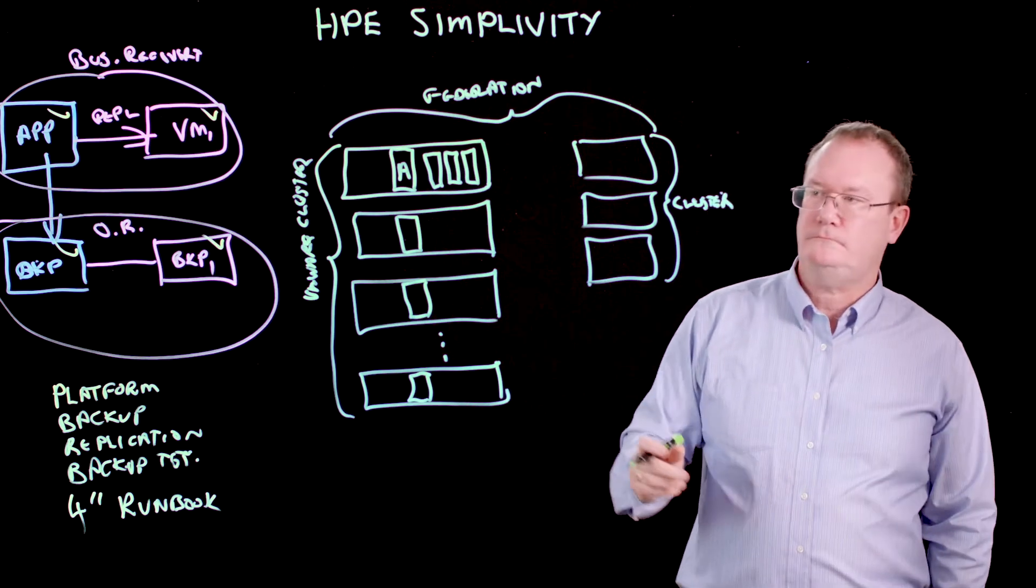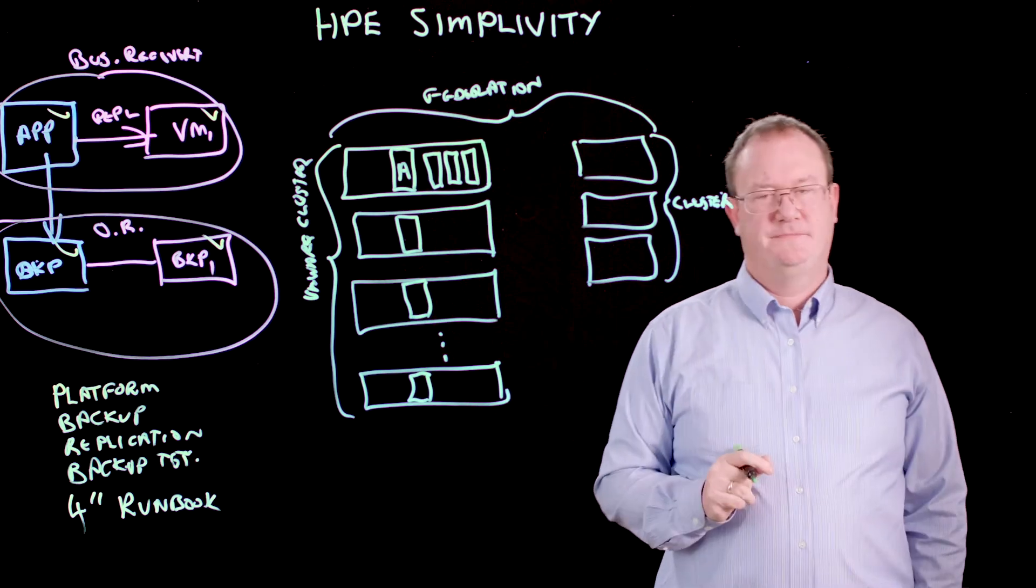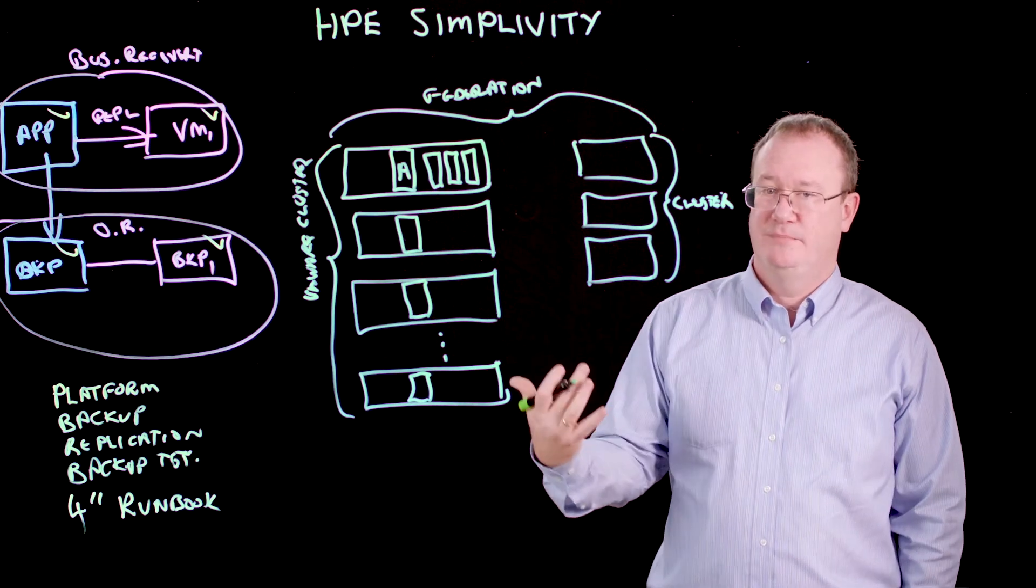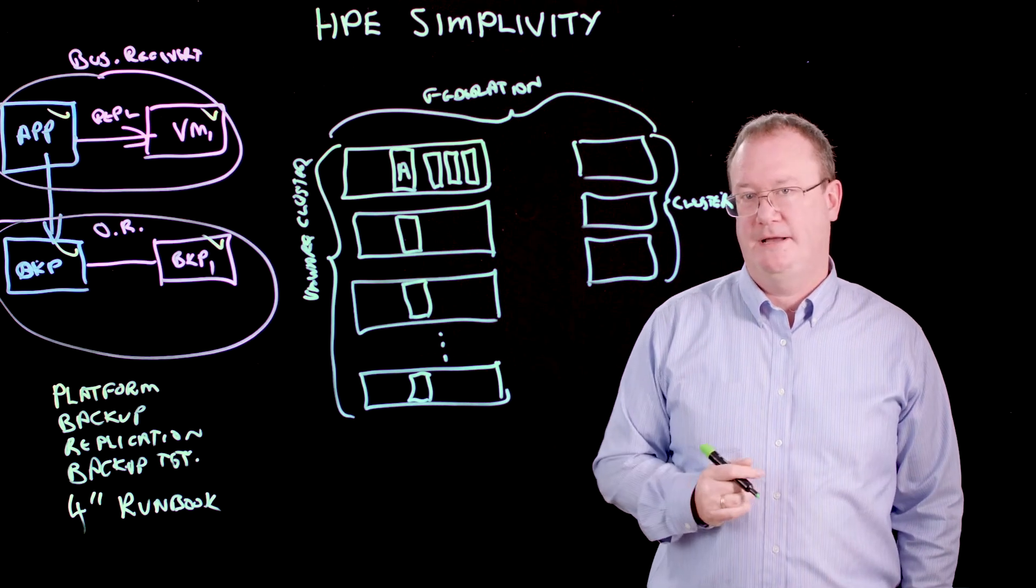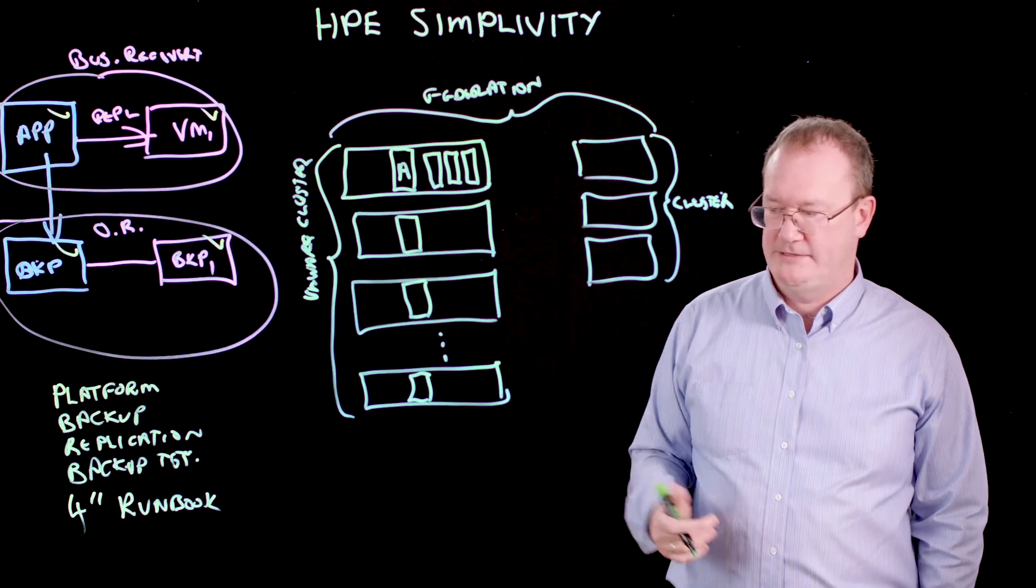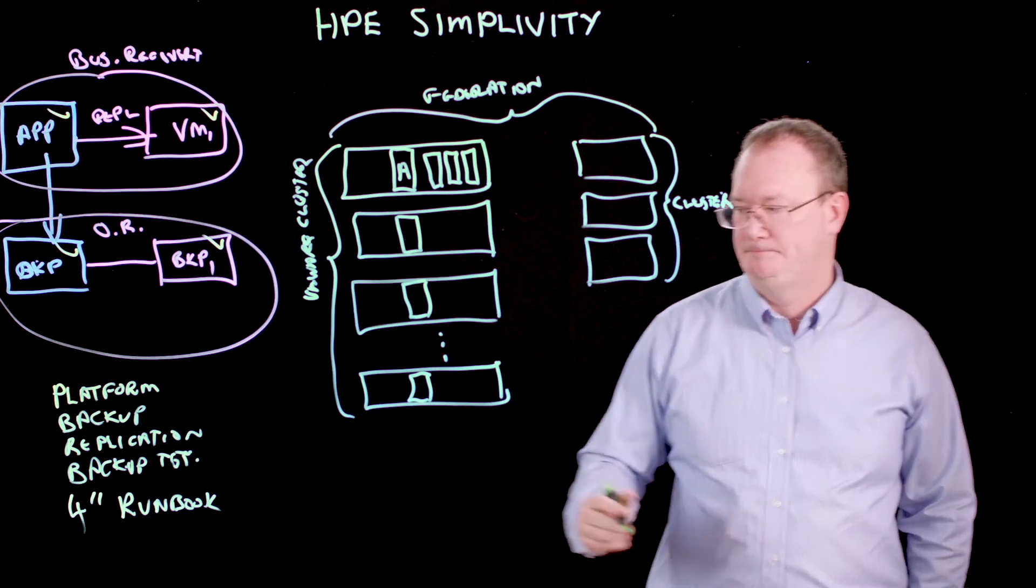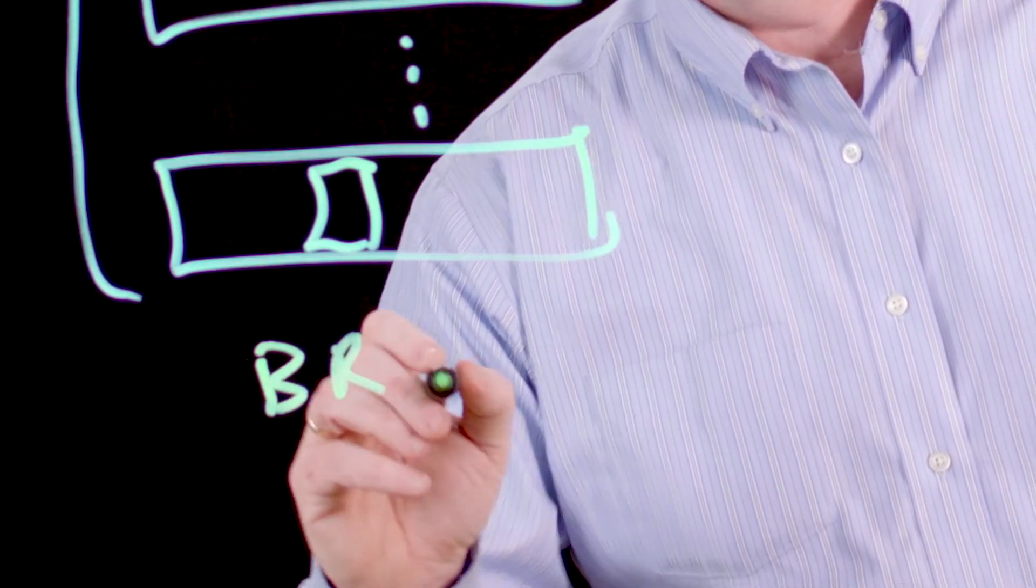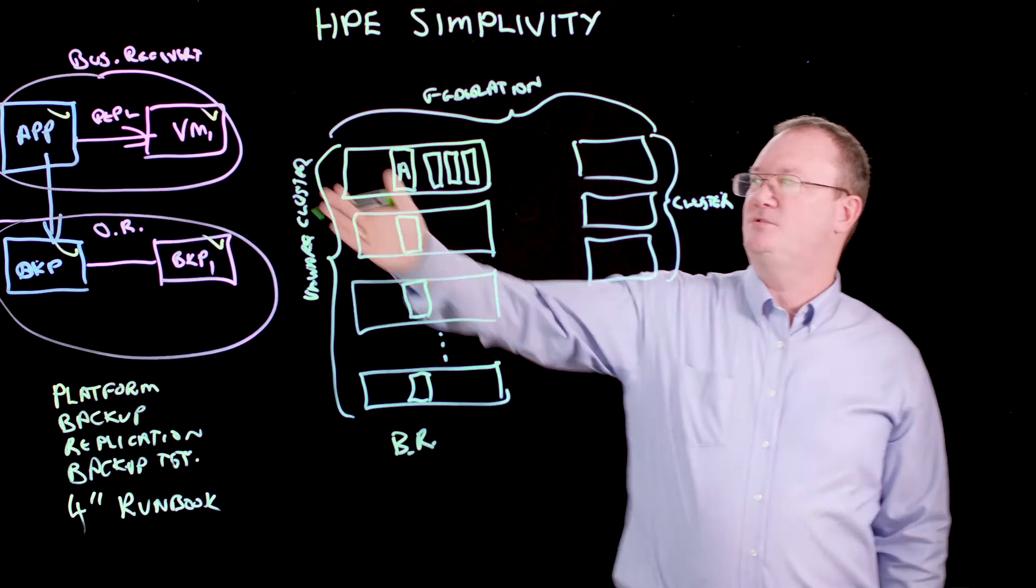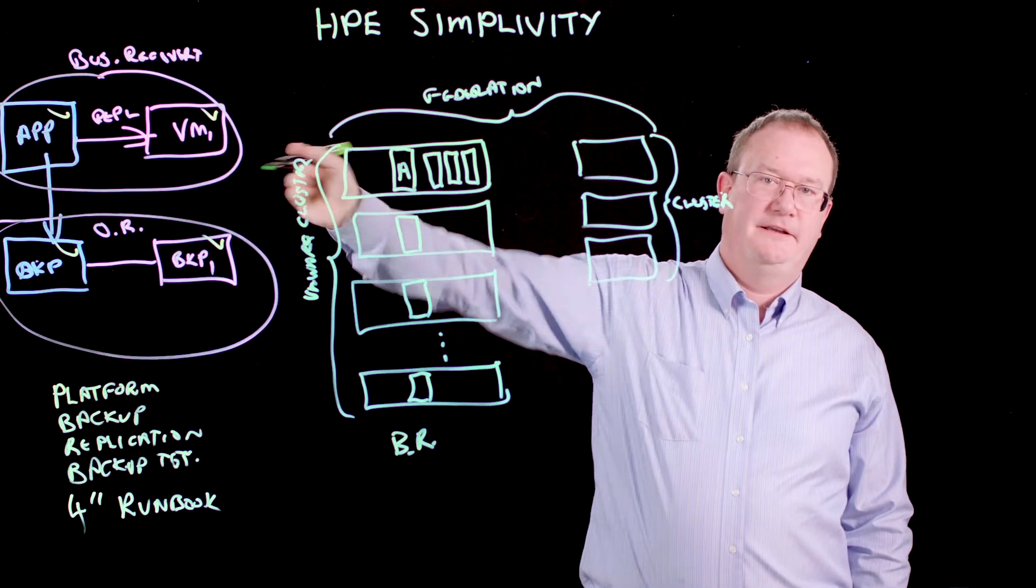Now, how do we get to business continuity with this model? What we do is we build a backup policy. Everything in SimpliVity automatically gets a backup policy. Every VM or data store can be tuned and tweaked to have its own backup policy. But let's take a simple one for an example. We're going to have our business recovery component of our backup policy. That's where we're implementing what effectively is replication.